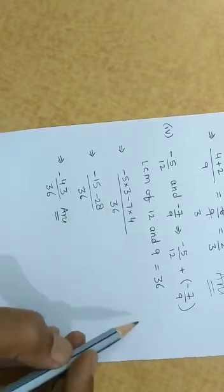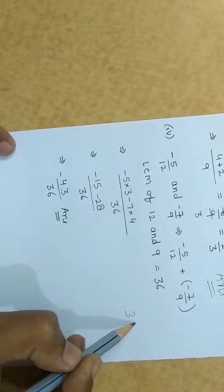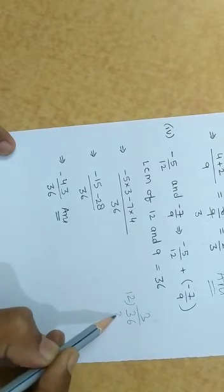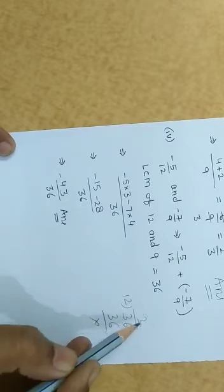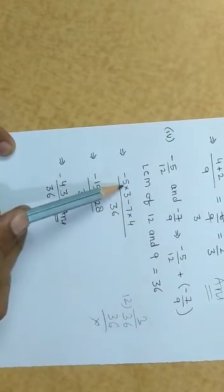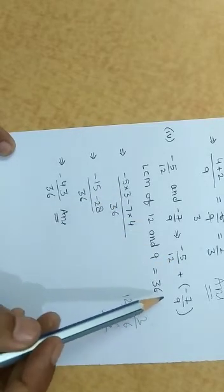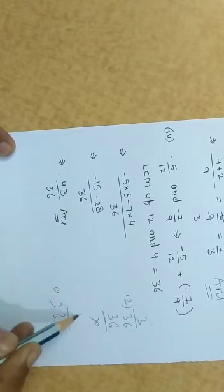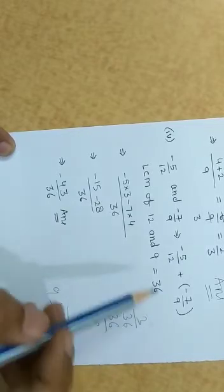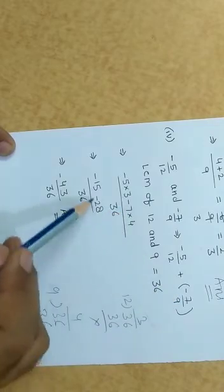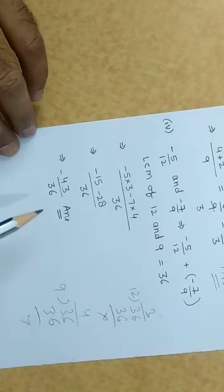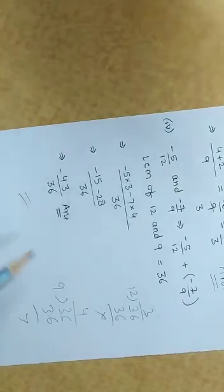Now LCM 36 divided by 12 equals 3, which is the quotient. Now multiply 5 by 3. Same as here, divide 36 by 9 equals 4, multiply 7 by 4. Minus 15 minus 28 equals minus 43 upon 36. Now you can solve this part of the question.